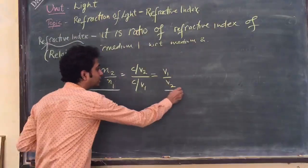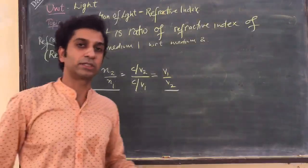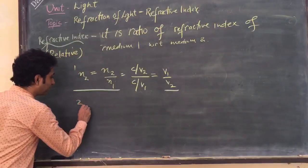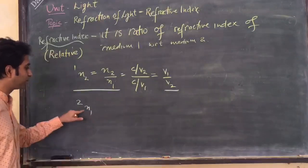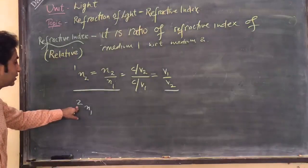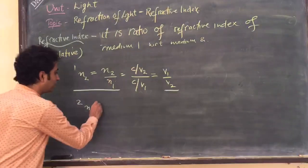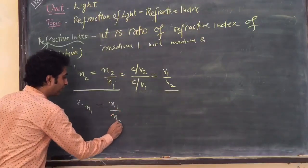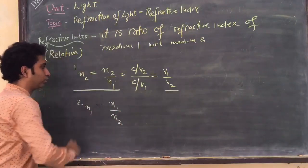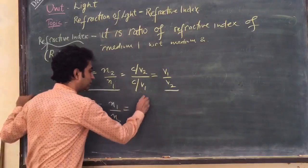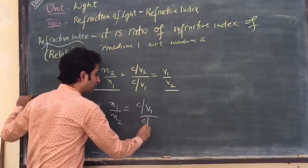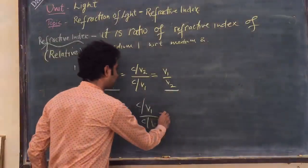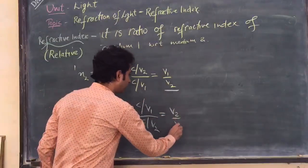You can also describe the refractive index of medium one with respect to medium two. This is denoted with the symbol swapped. It is defined as the ratio of n1 divided by n2, which becomes (c/v1) divided by (c/v2), and this simplifies to v2 divided by v1.